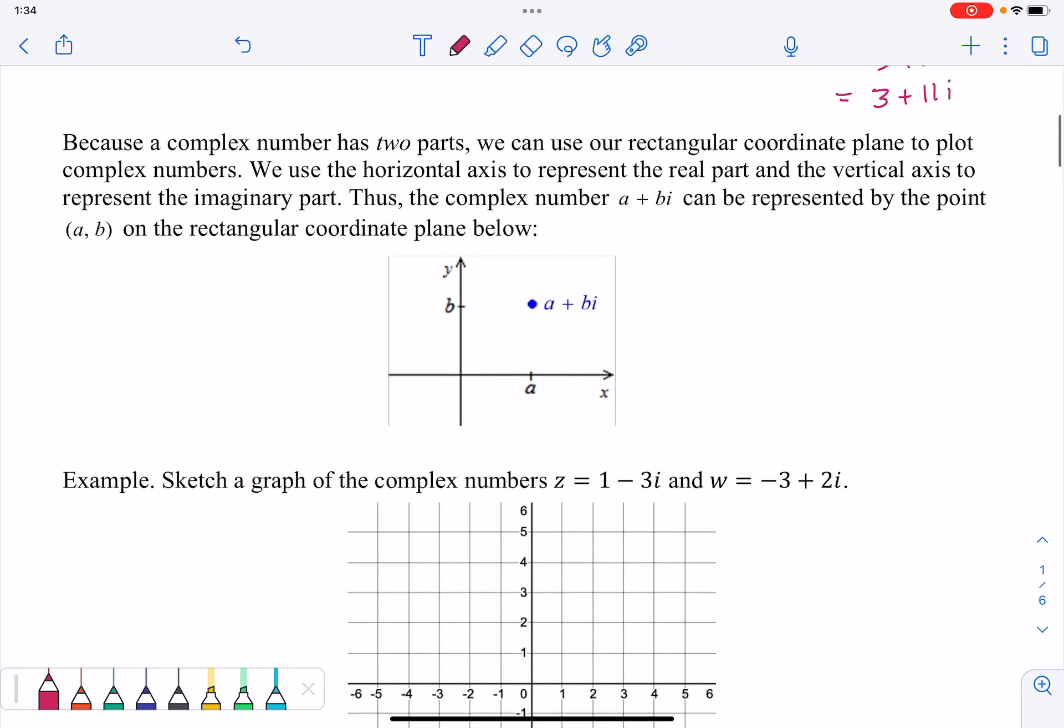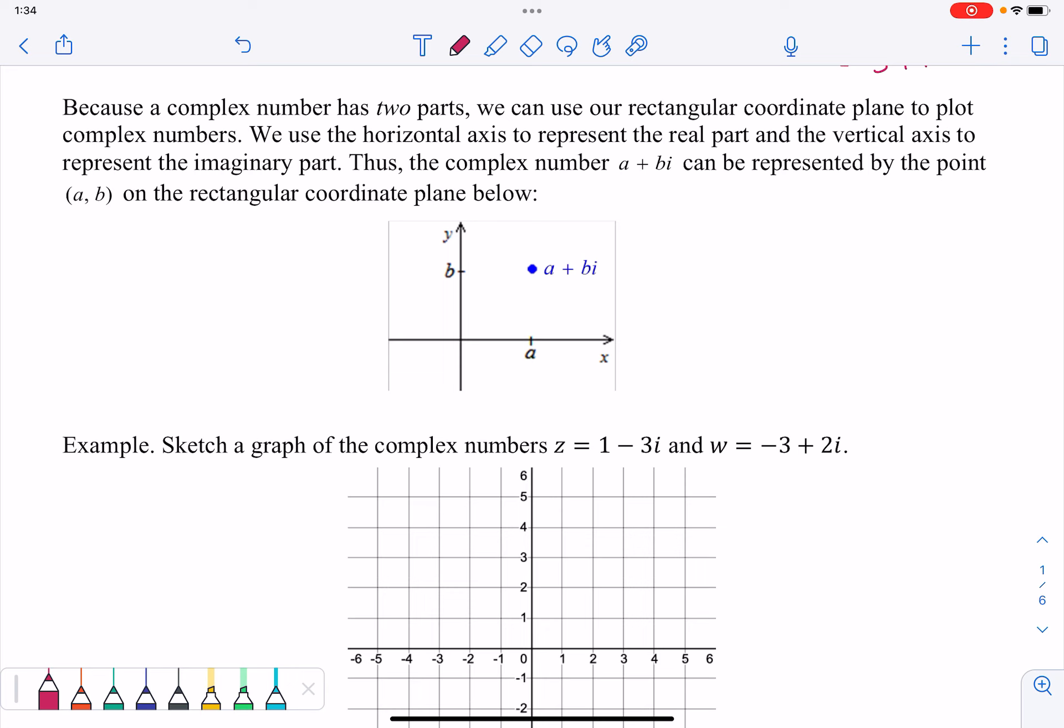So because a complex number has two parts, we can actually use a rectangular coordinate plane to plot complex numbers. We use the horizontal axis to represent the real part, and the vertical axis to represent the imaginary part. So the complex number A plus BI can be represented by the point AB. So I have this connection between my complex number A plus BI and its location, which is going to be A comma B on the rectangular coordinate plane.